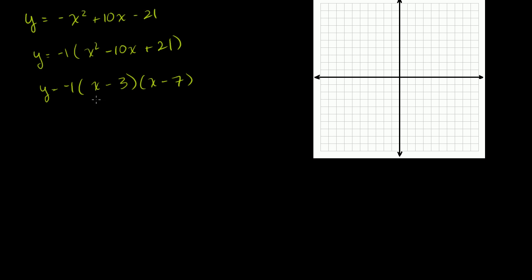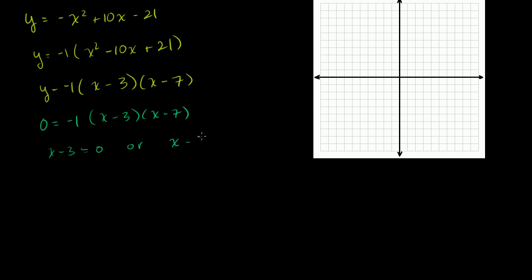To find the x-intercepts, we set the whole equation equal to 0: negative 1 times x minus 3 times x minus 7. The x-values that make y equal to 0 are those that make x minus 3 equal to 0, giving x equals 3, or x minus 7 equal to 0, giving x equals 7. So we get our two x-intercepts: the points 3 comma 0 and 7 comma 0.